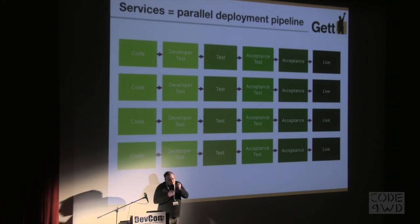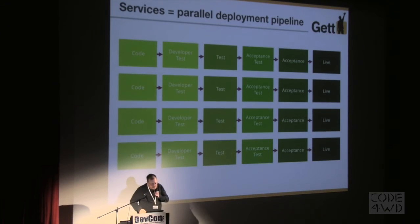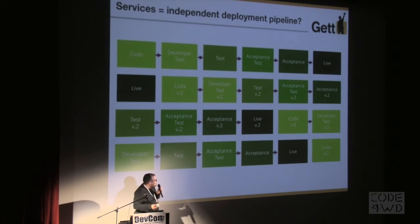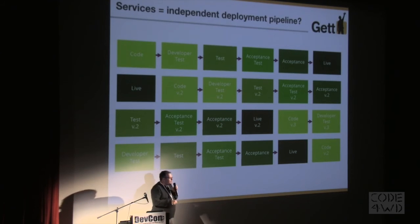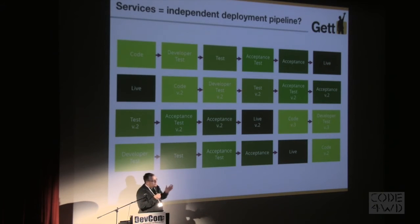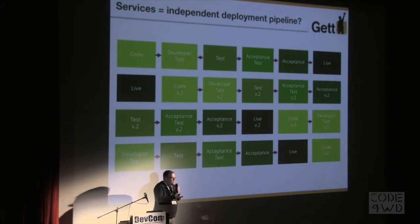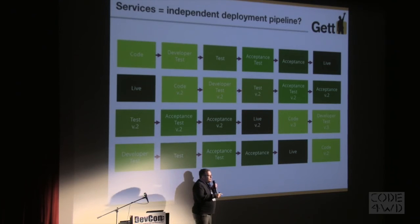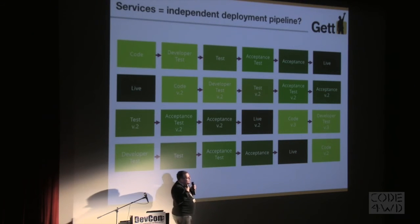Deployment becomes much faster — if one service needs a lot of regression testing, do that regression testing for that service alone, but still deploy the others. Another level is to deploy everything all the time, with each service having its own lifecycle and its own versions. It's a nightmare for operations maybe, but a blessing for A/B testing. Amazon, for instance, has around 100,000 services as part of the system and deploys every 10 seconds — not all of the system every 10 seconds, but with so many services deploying once or twice a week it becomes a deployment about 10 times a second.